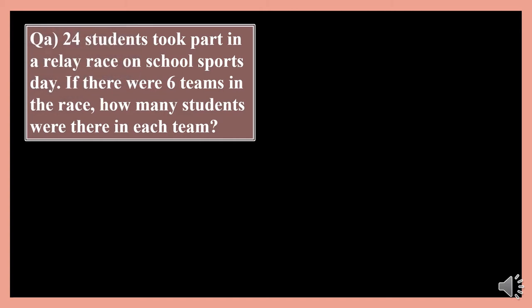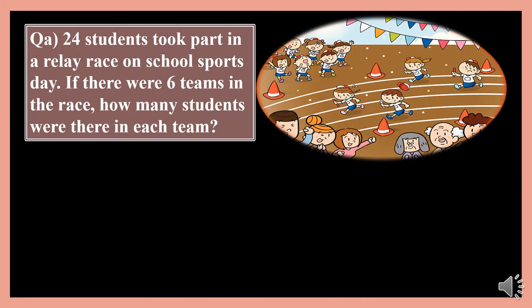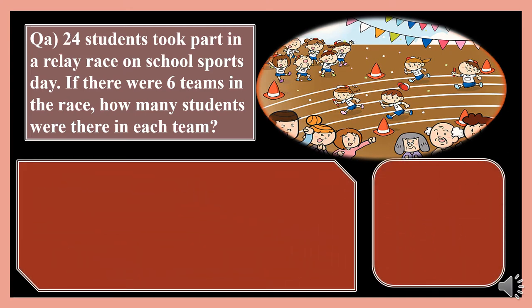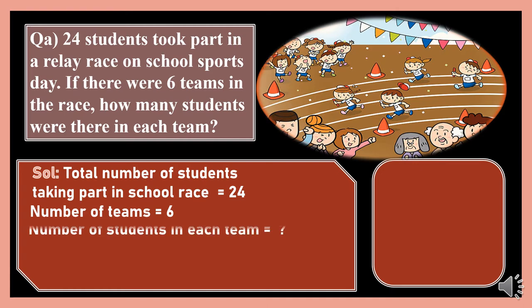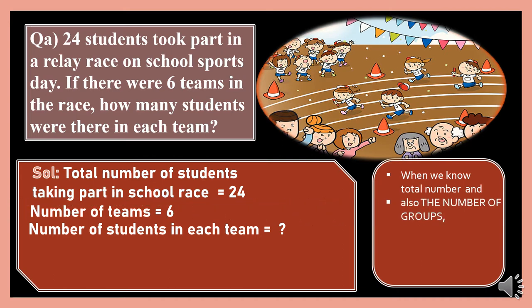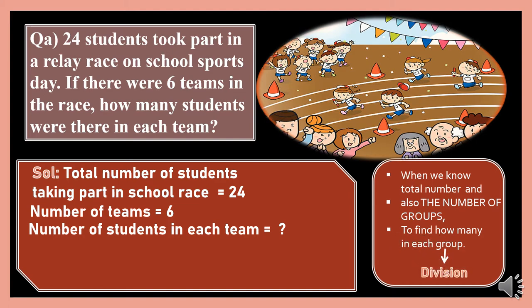Let us see the first question. 24 students took part in a relay race on school sports day. If there were 6 teams in the race, how many students were there in each team? So, what is given to us? 24 students — the total number taking part in the school race is 24. Number of teams is 6. And what we need to find: the number of students in each team. Here, when we know the total number and also the number of groups, to find how many in each group, we use division.